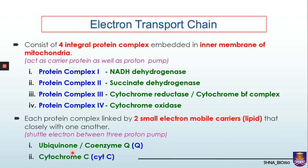ETC consists of four integral protein complexes embedded in the inner mitochondrial membrane. Protein complex 1 is known as NADH dehydrogenase. Protein complex 2 is succinate dehydrogenase. Protein complex 3 is cytochrome reductase, also known as cytochrome BF complex. Protein complex 4 is cytochrome oxidase. Additionally, each protein complex is linked with two small electron mobile carriers made from lipids: ubiquinone (coenzyme Q) and cytochrome C.